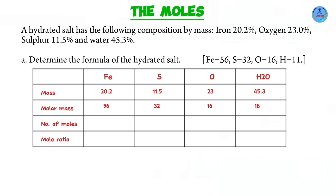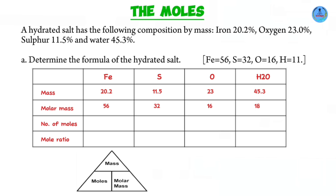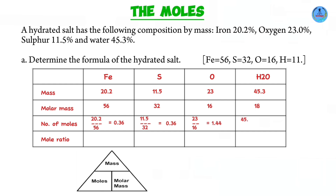Our next step: calculating the number of moles using the formula moles equals mass over molar mass. In the case of iron, mass is 20.2 divided by molar mass 56, giving us 0.36. We continue doing the same for sulfur, oxygen, and water. This gives us 0.36 for sulfur, 1.44 for oxygen, and 2.52 for water.